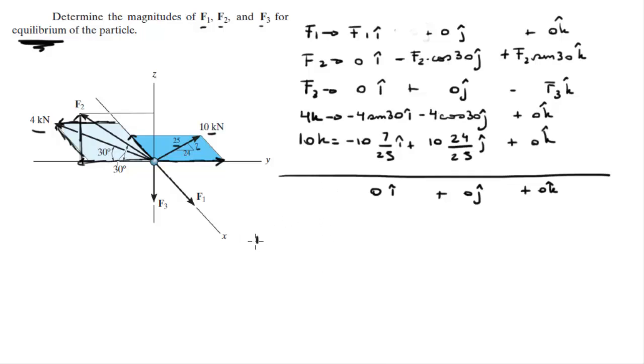Let's start with the i components. We have F1 + 0 + 0 - 4 sin(30°) - 10(7/25) = 0. That's F1 - 2 - 2.8 = 0. So F1 = 4.8 kN.